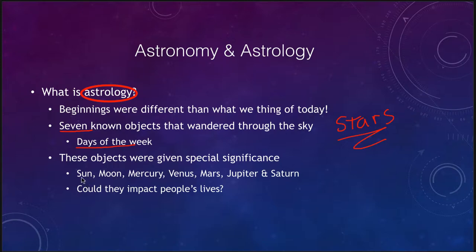These objects were the Sun, the Moon, Mercury, Venus, Mars, Jupiter, and Saturn — the Sun and the Moon and the five planets that were known. They wandered through the sky, so they had special importance and a special significance to ancient peoples.